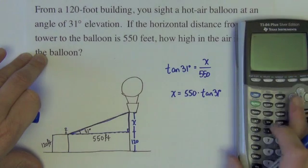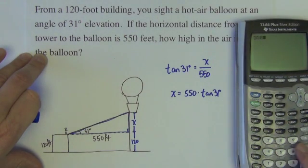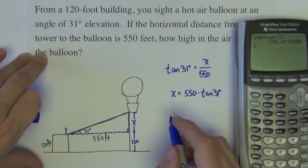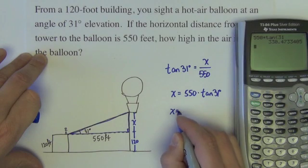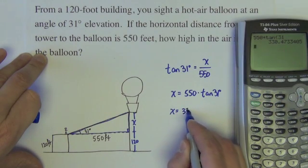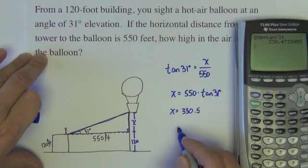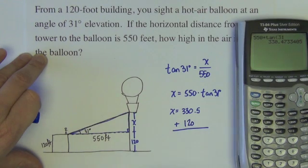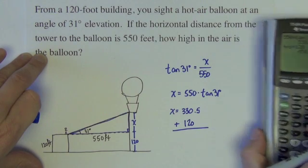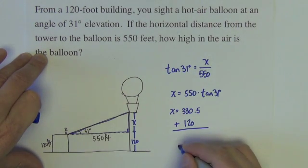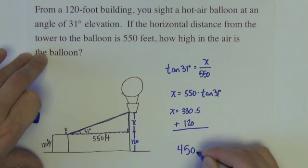Tangent of 31 degrees equals opposite x over adjacent 550. So x equals 550 times the tangent of 31 degrees. So if I do that here, 550 times the tangent of 31, we get x equals 330.5. We need to add the 120 feet to it. And we get 450.5 feet.